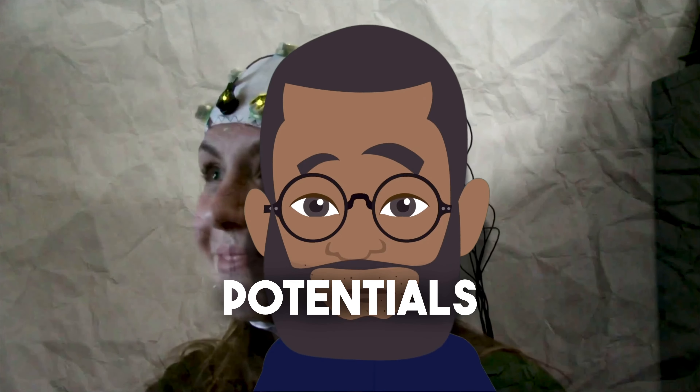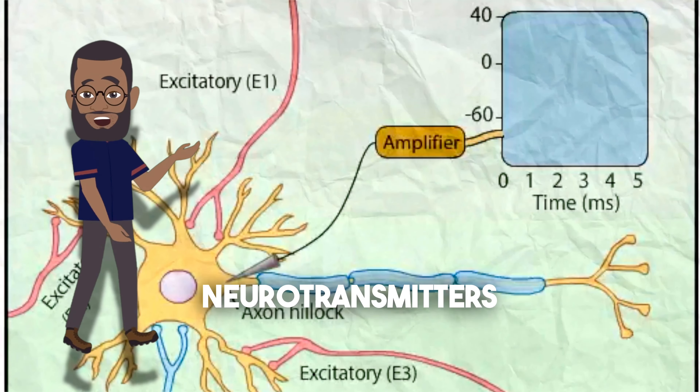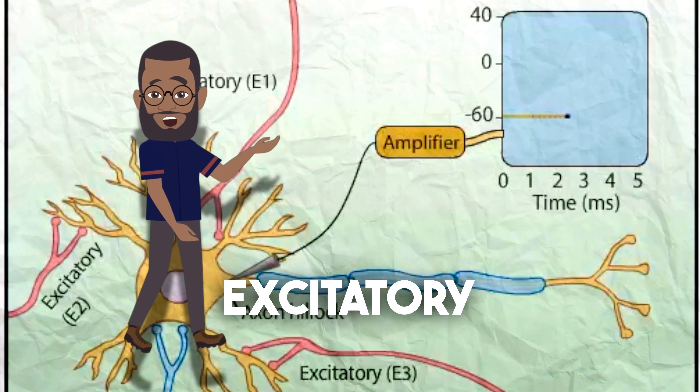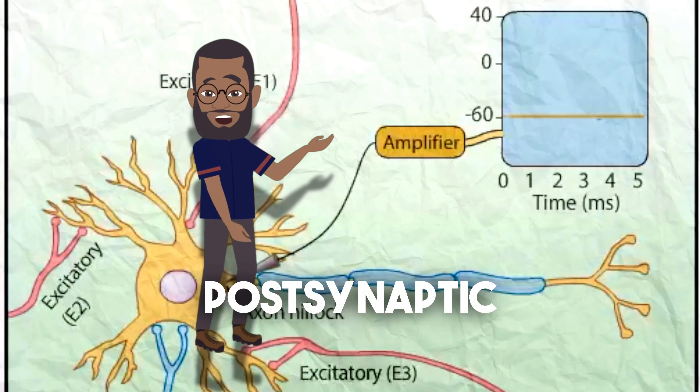Despite advances in imaging technologies, EEG or electroencephalogram remains the primary paraclinical technique for seizure evaluation. Its immediate use is to evaluate seizures and illnesses that mimic seizures. It is also used to classify seizure types, evaluate comatose patients in the intensive care unit, and diagnose encephalopathies.